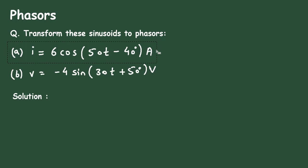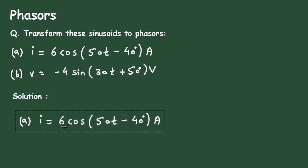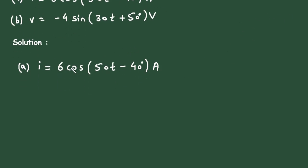So the solution for this: currently it is given in time domain format. Its solution will be magnitude of I is equal to 6, which is the amplitude or maximum current, at an angle.